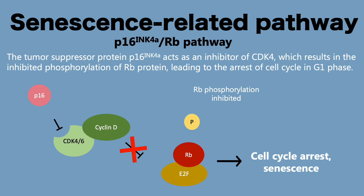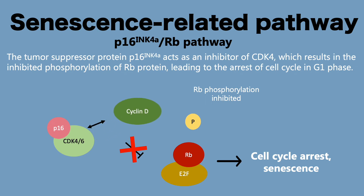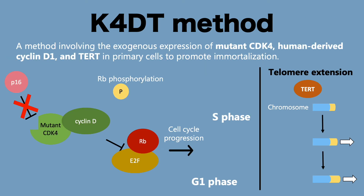One of the pathways that regulates senescence in cells is the P16-RB pathway. In this pathway, the tumor suppressor protein P16 acts as an inhibitor of CDK4, which results in the inhibited phosphorylation of the RB protein, leading to the arrest of the cell cycle in its G1 phase. Our laboratory is researching another cell immortalization method: a combination expression of cell cycle regulators and TERT protein called the K4DT method.